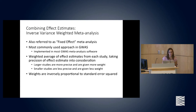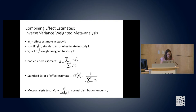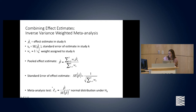The weights are inversely proportional to the standard error squared. Concretely, you have effect estimates and standard errors from each study, create weights as a function of standard error, use those to get a pooled effect estimate and pooled standard error, then create a z-score that is just beta divided by the standard error of beta, which is normally distributed under the null hypothesis.